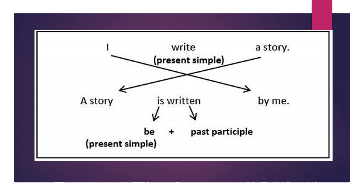So we don't have a helping verb here, so I'll add one. If the sentence is present simple, I'll put am, is, or are. 'A story' takes 'is,' and then I put the past participle of 'write,' which is 'written.' So I'll say: 'A story is written by me.'